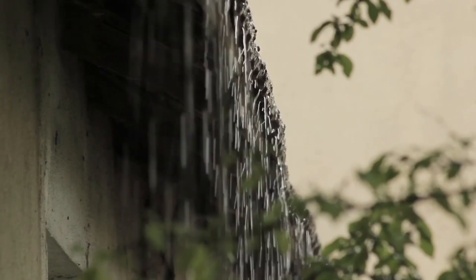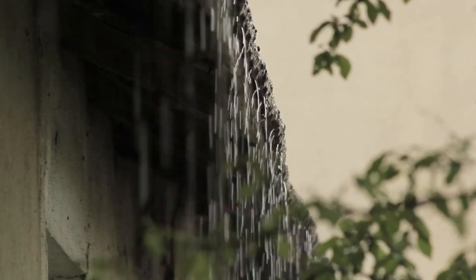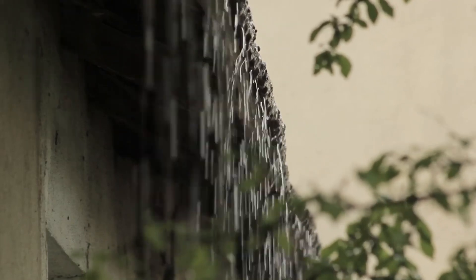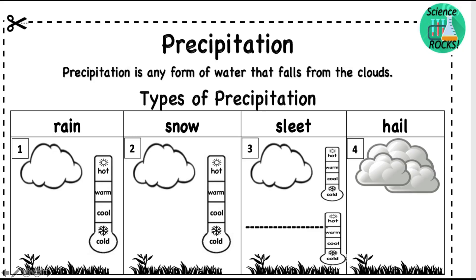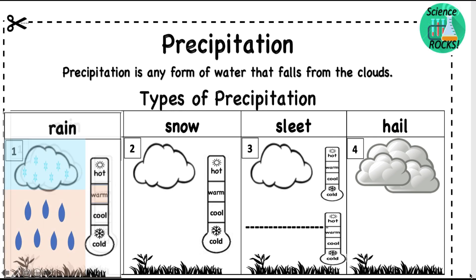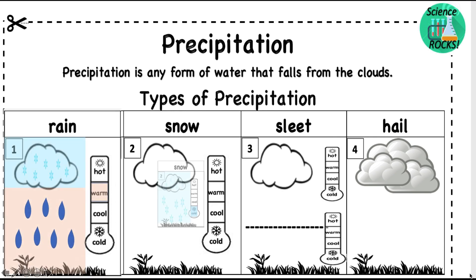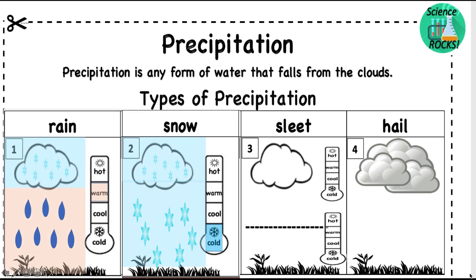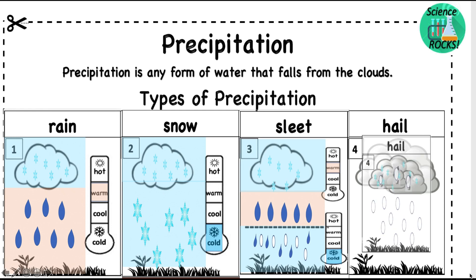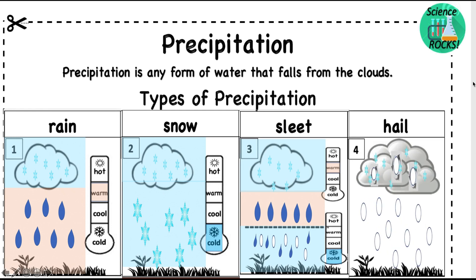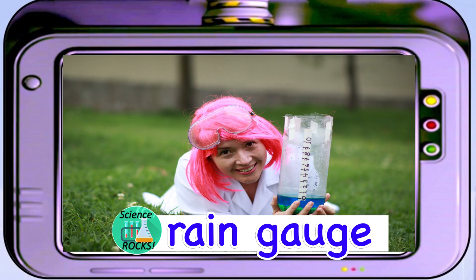Precipitation is any form of water that falls from the clouds. We learned four types of precipitation: rain, snow, sleet, and hail. You can measure the amount of rainfall by using a rain gauge.